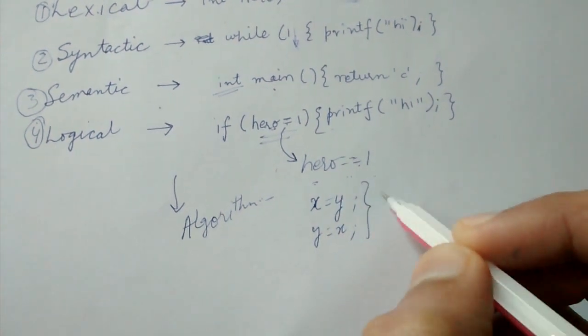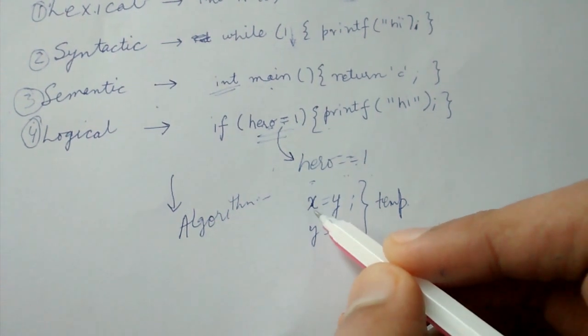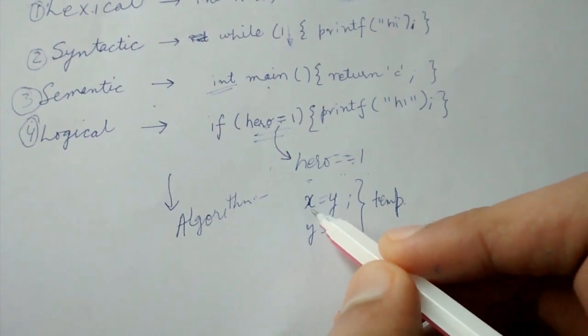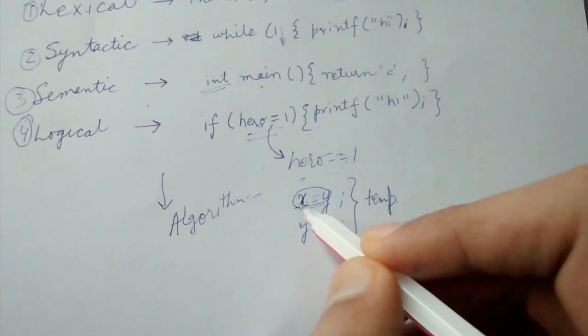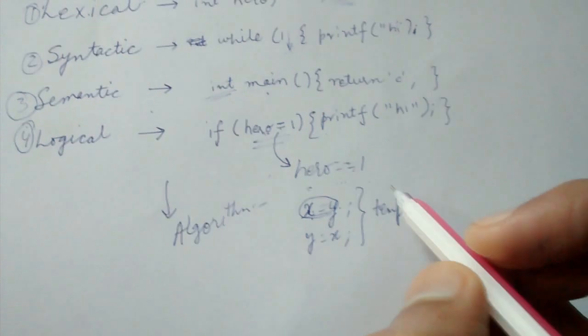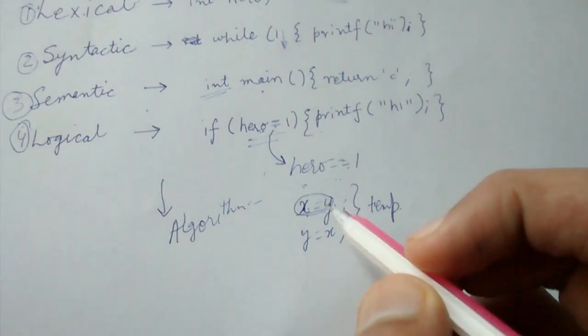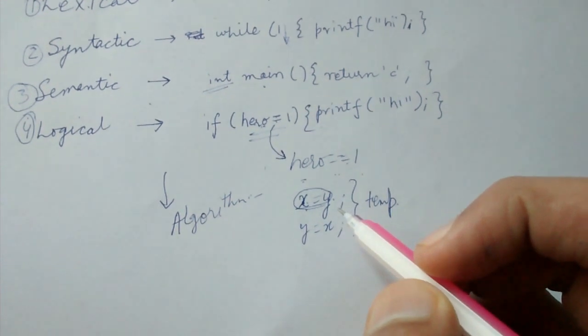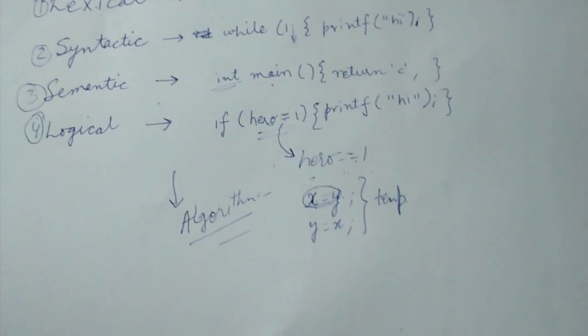You have to use a temp in between to hold the earlier value of x because in this line x is being overwritten by the value of y. These are the problems or errors with your idea. Your idea is wrong here. So those can be called algorithmic errors. Thank you friends.